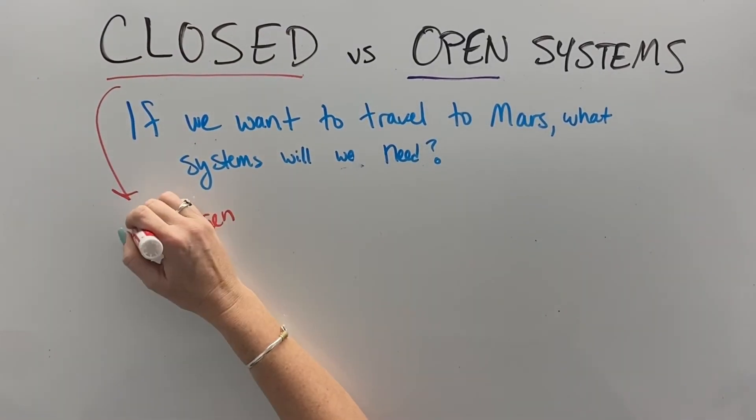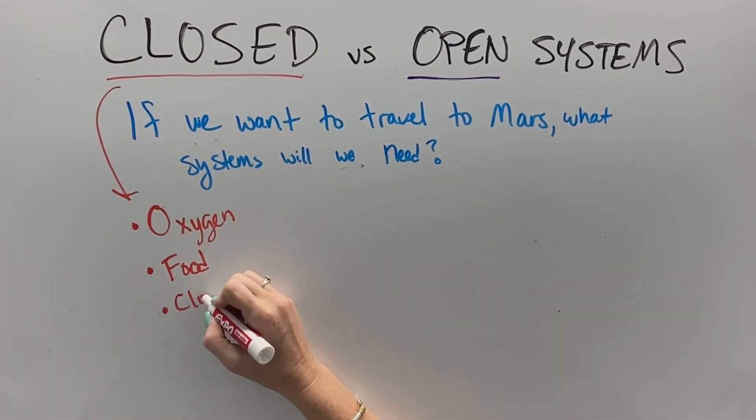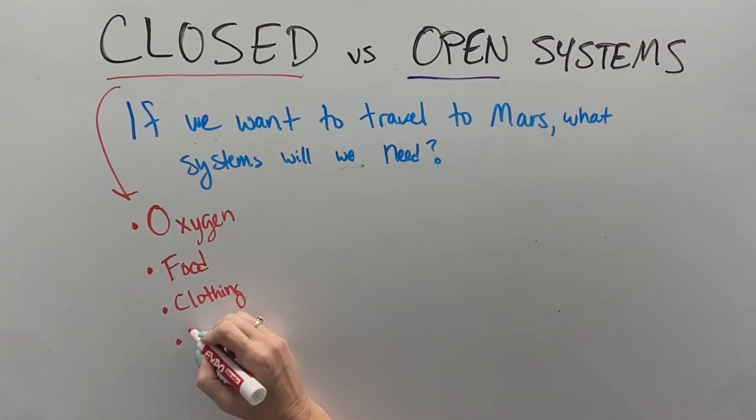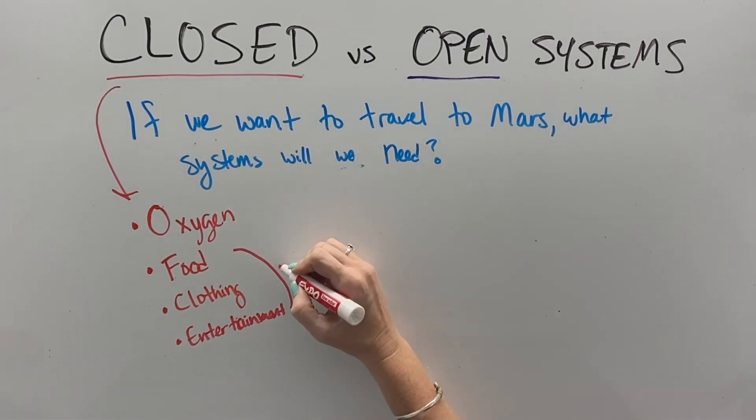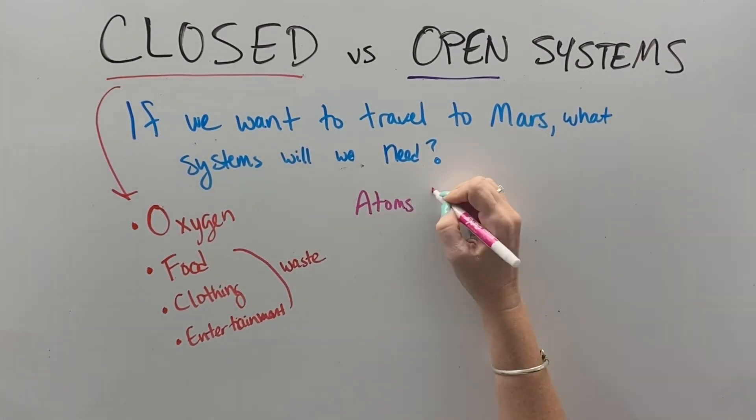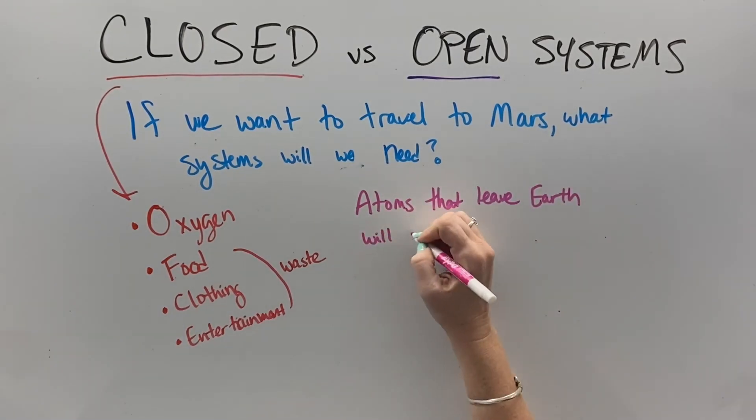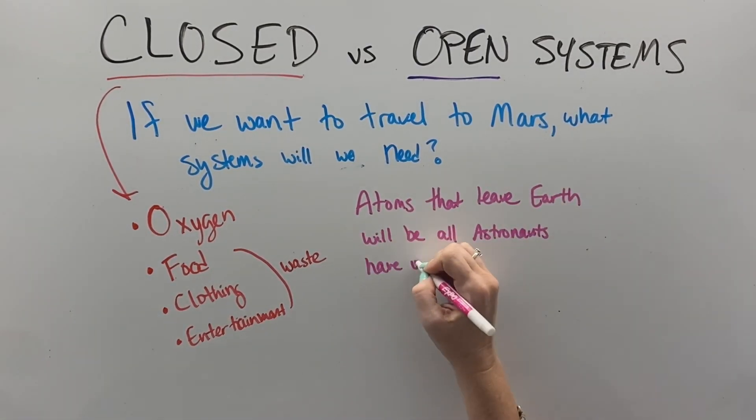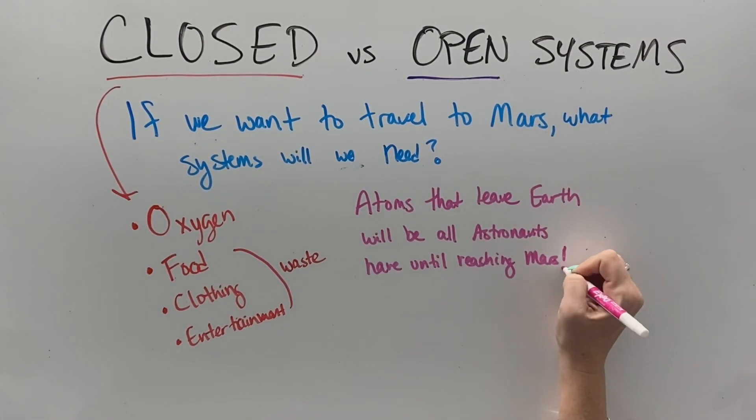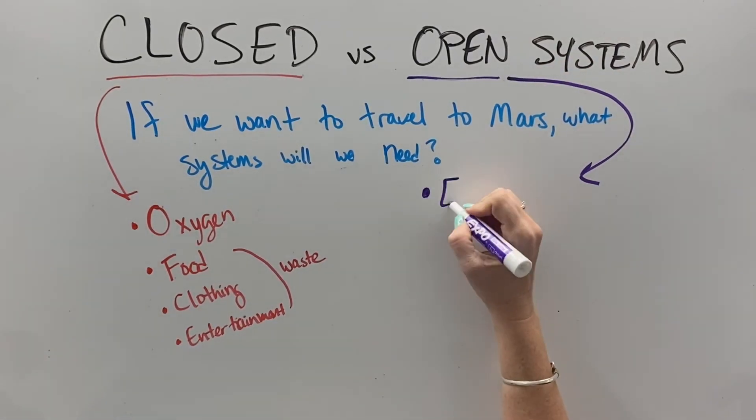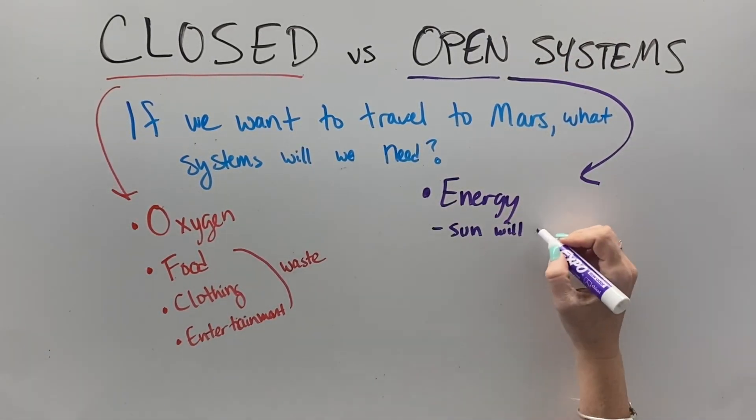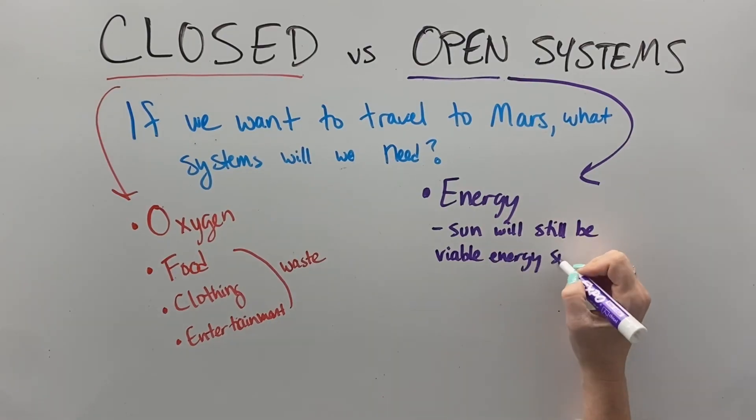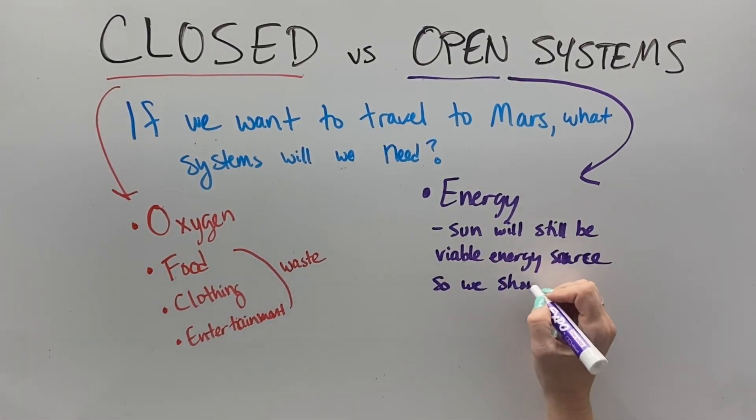We might try to recycle and close the system a bit, but the key is that here on earth we want to be sustainable. And if we ever want to try to travel to Mars, we got to close those matter systems: oxygen, food, clothing, entertainment. The atoms have to cycle around because when we leave the earth, there's nowhere for the astronauts to get any new atoms. There's no Mars Mart and the energy systems can be open because the sun's always going to be available to us. So we can have open energy systems, but matter systems need to be closed.